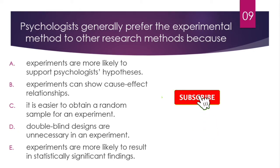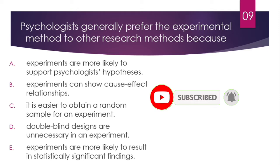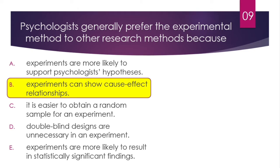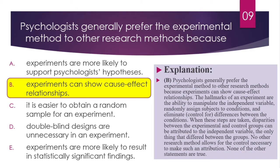Question number 9. Psychologists generally prefer the experimental method to other research methods because? The correct answer is B — experiments can show cause-and-effect relationships. The hallmarks of all experiments are the ability to manipulate the independent variable, randomly assign subjects to conditions, and eliminate or control the differences between conditions. When these steps are taken, disparities between the experimental and control groups can be attributed to the independent variable — the only thing that differs between the groups. No other research method allows for the control necessary to make such an attribution.